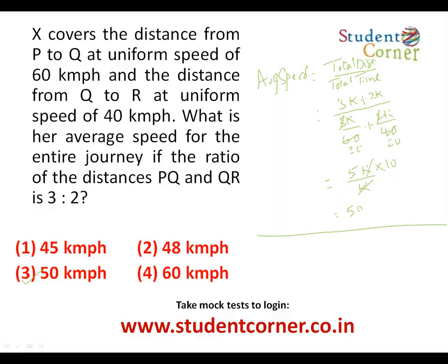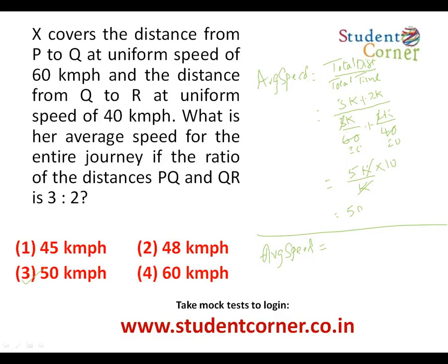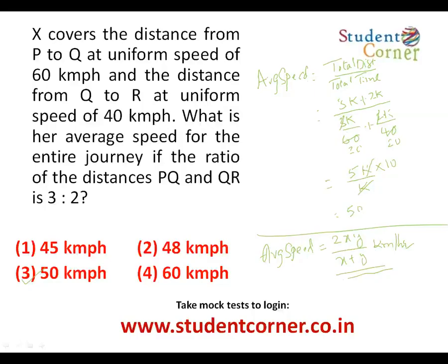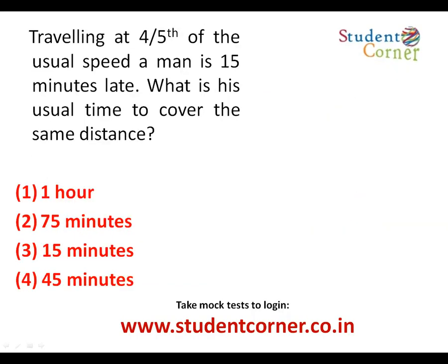If the distances are equal, then the average speed formula is 2xy divided by x plus y km per hour, where x and y are the two speeds. If the distances are equal, you can directly use this formula. Since the distances were not equal in the previous problem, we used the total distance by total time formula.